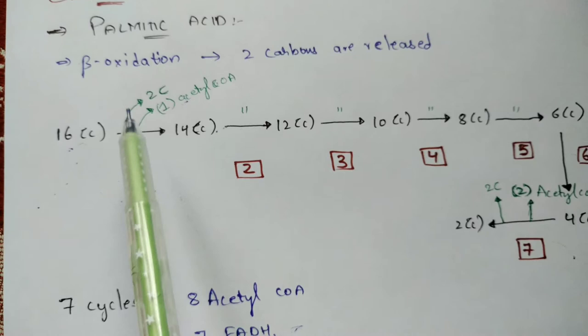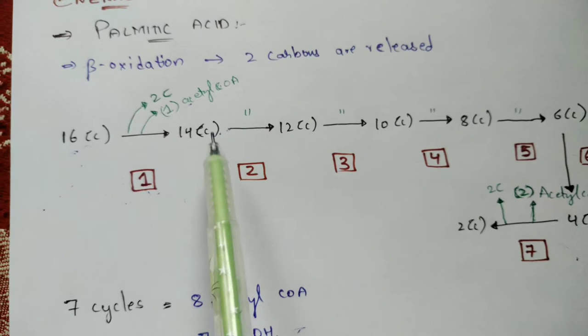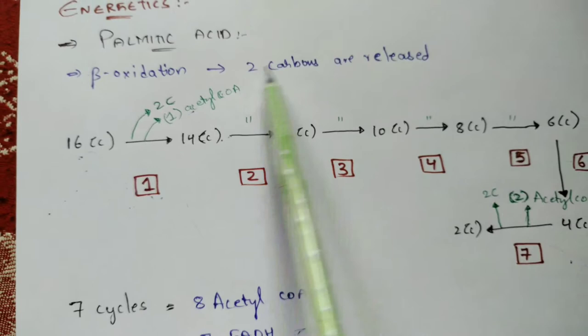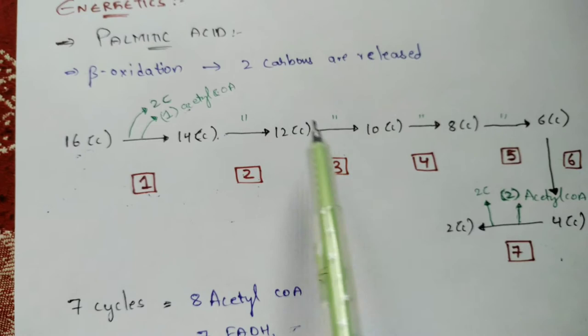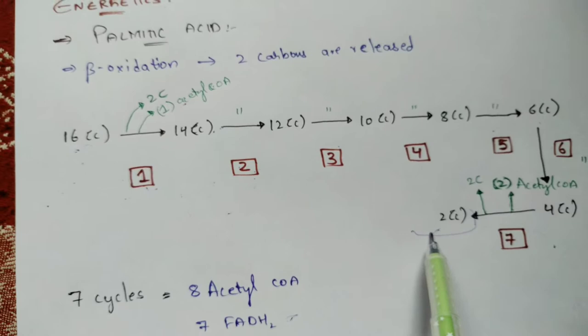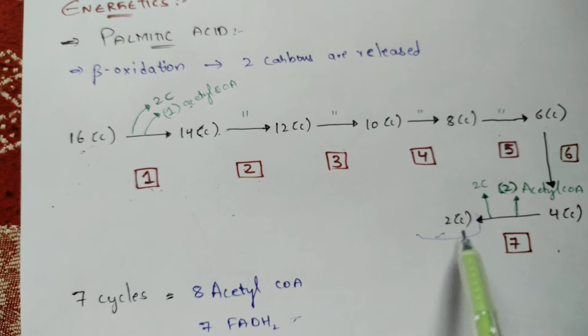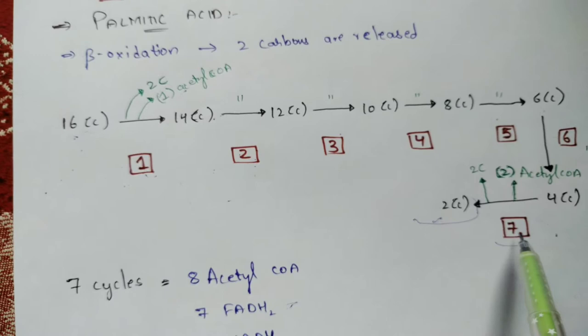In each step of beta oxidation, two carbons are released along with one acetyl-CoA, one FADH₂, and one NADH molecule. For example, after one step the 16-carbon compound becomes 14-carbon, then 12-carbon, and so on, until it finally reduces to a 2-carbon compound through seven beta oxidation steps.